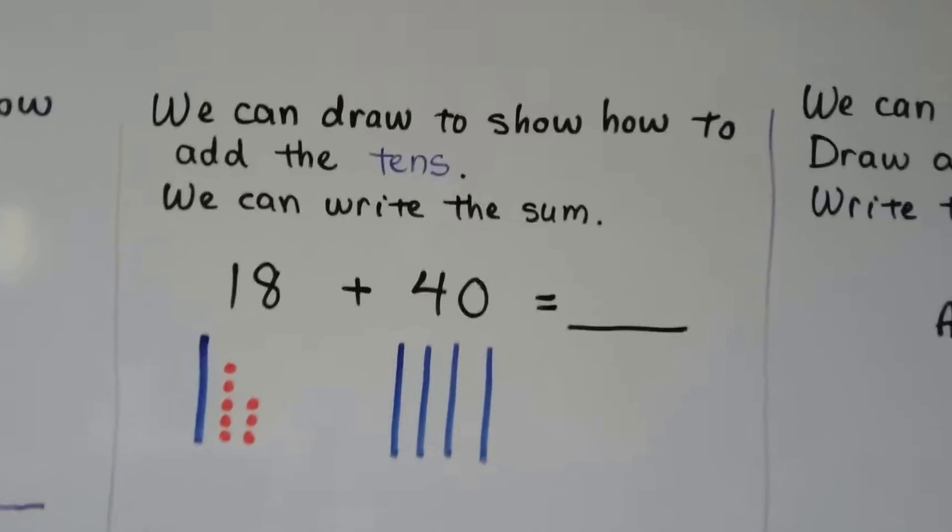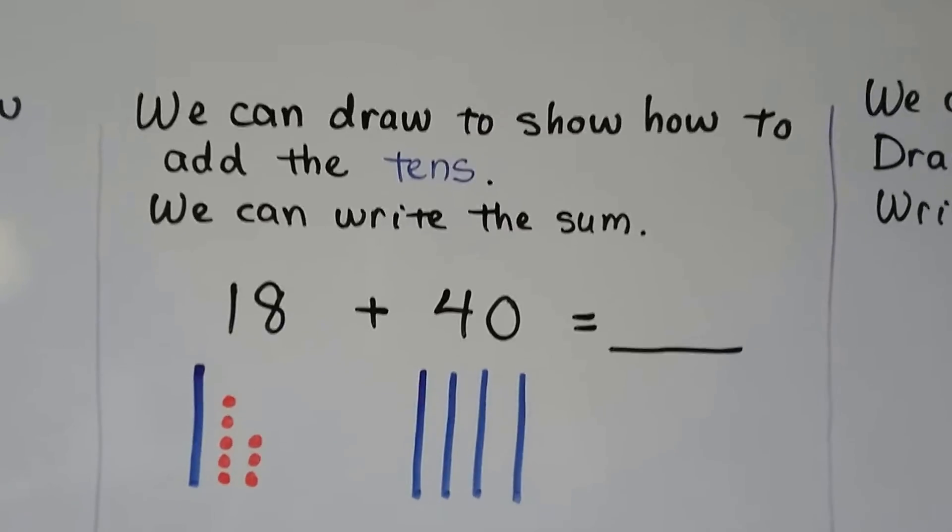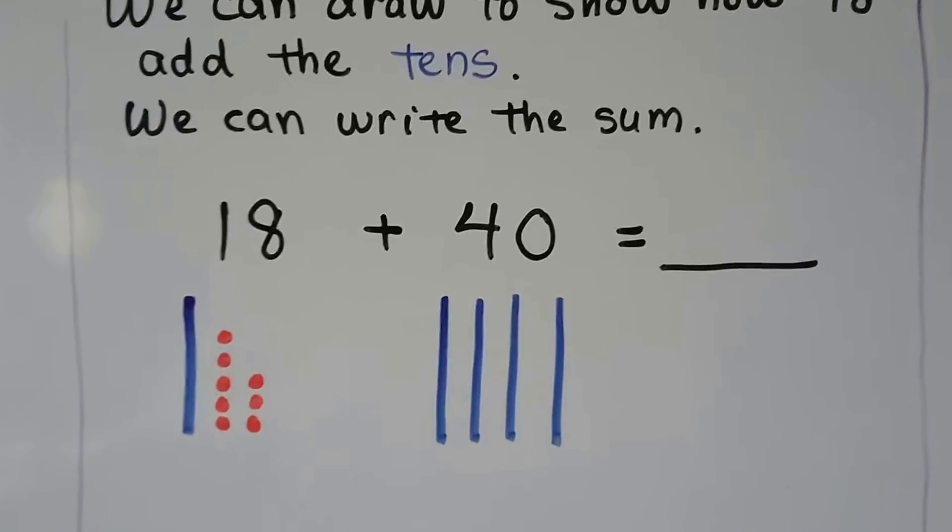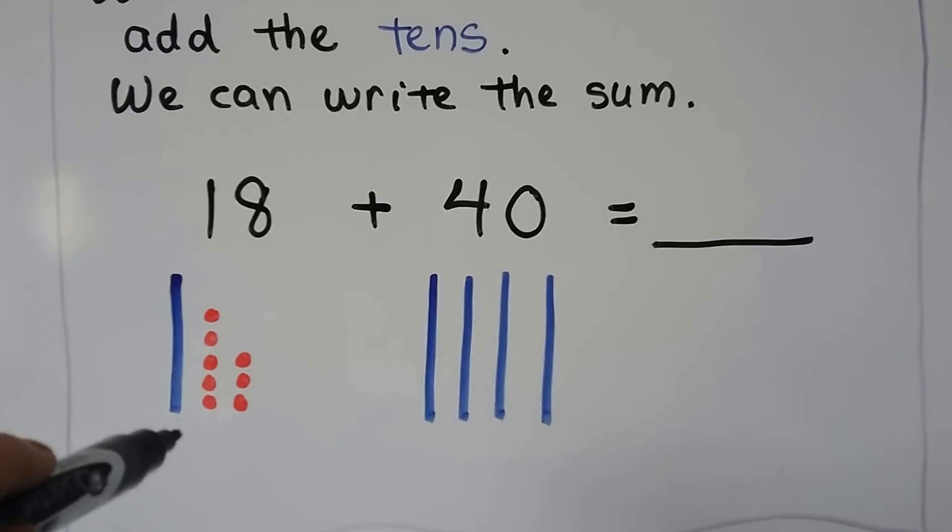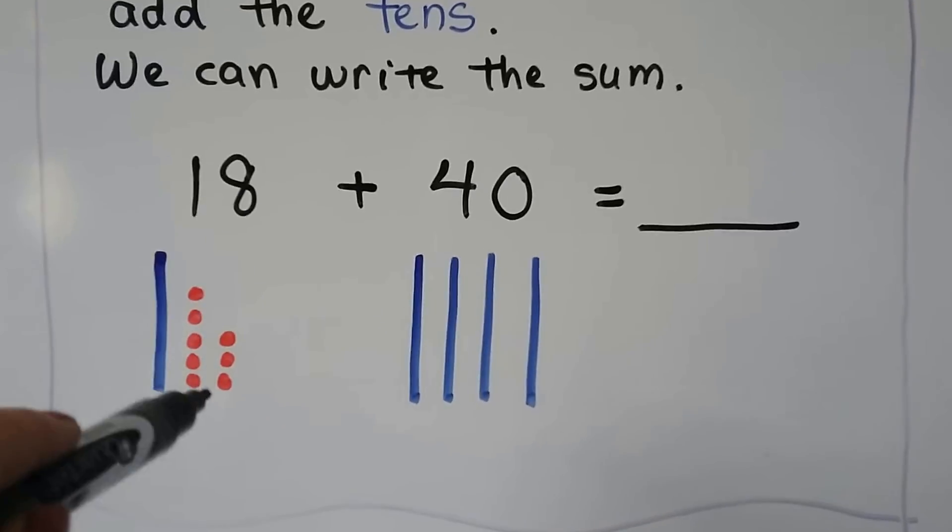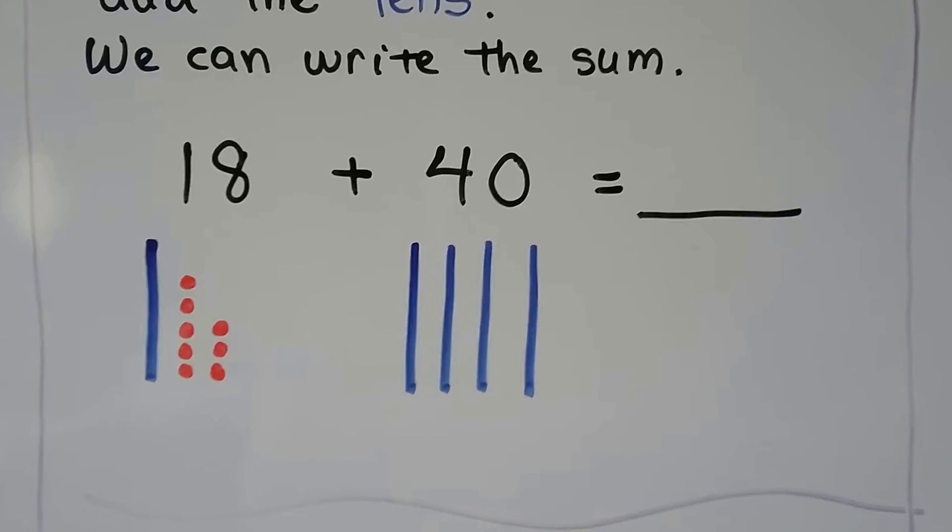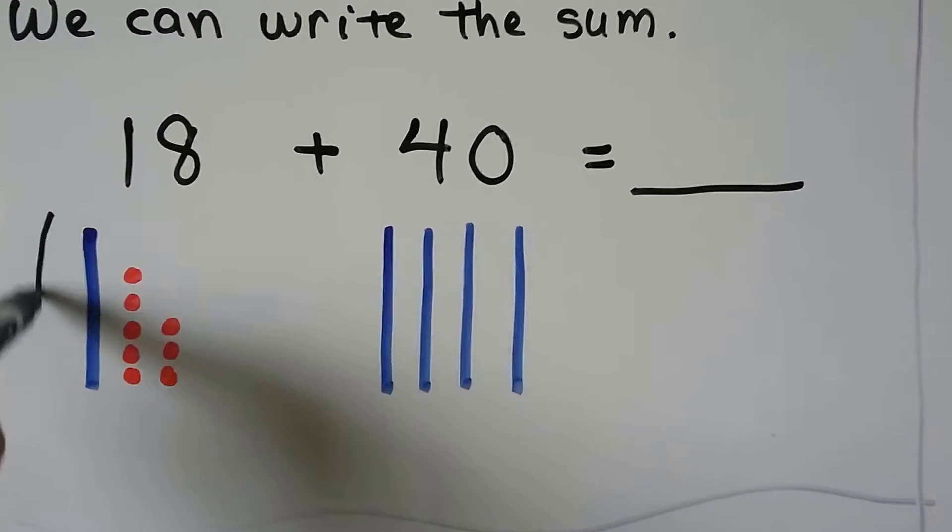We can draw to show how to add the 10s. We can write the sum. We have 18 plus 40. We use one long bar for a 10, and we have 8 ones for the 18, and we have 4 tens for the 40. We can group the 10s together.